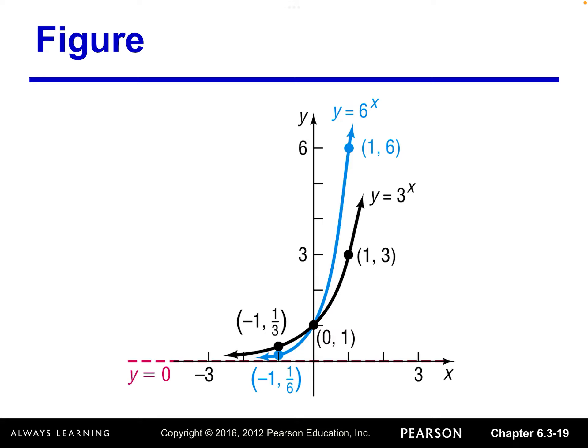This graph compares different growth factors and how they change the graph. As the growth factor increases, the exponential function's graph becomes more close to the y-axis, meaning as x increases, y increases more rapidly. For example, y equals 10 to the x power is more close to the y-axis, while y equals 2 to the x power is more flat than 3 to the x.